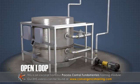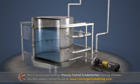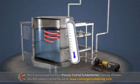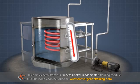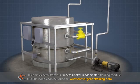An open loop controller uses an input variable to produce the desired output. One example of an open loop controller is shown here. In this system, a steam coil is used to heat liquid in a tank. A manually adjusted valve on the steam line is used to affect the temperature of the liquid.